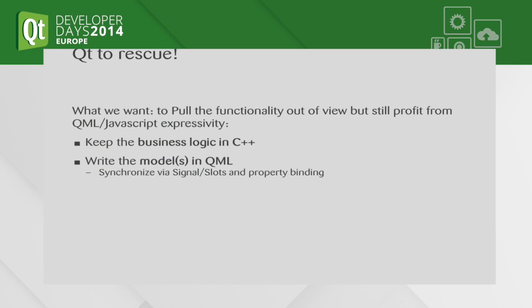Fortunately, we have Qt, and it has a very interesting feature that we can profit from just to make the synchronization. I'm talking about signal slots and property binding. The idea here is we want to have the business logic in C++, and we want to have the model in QML.